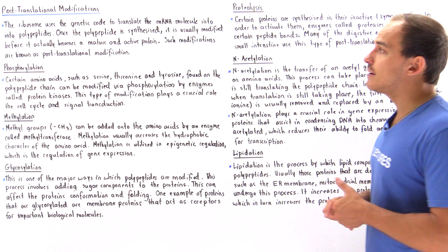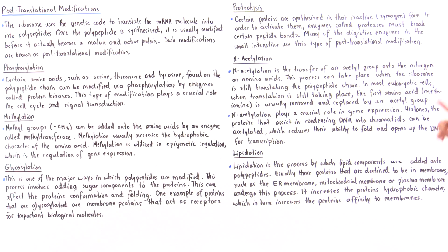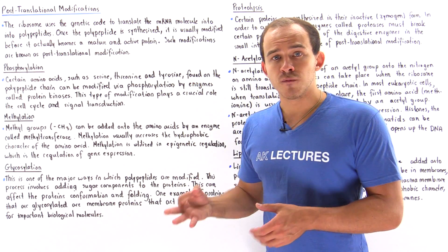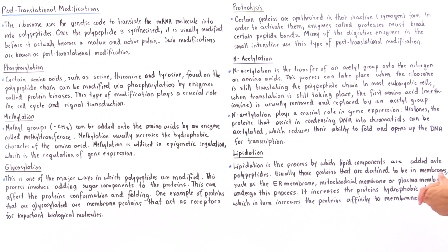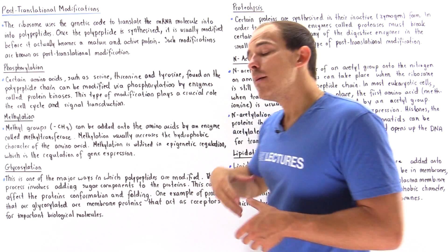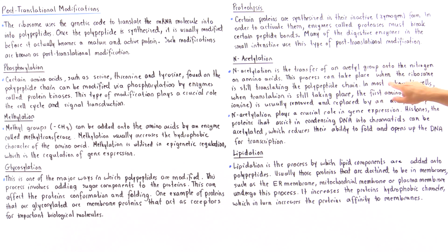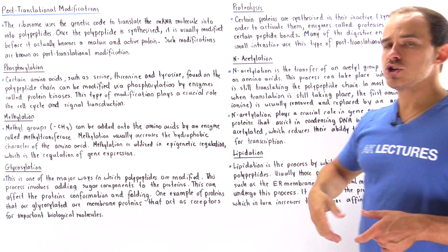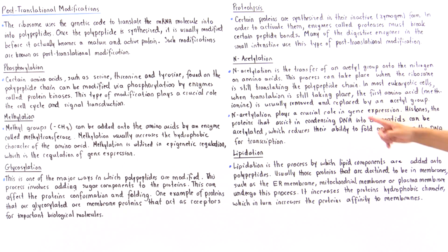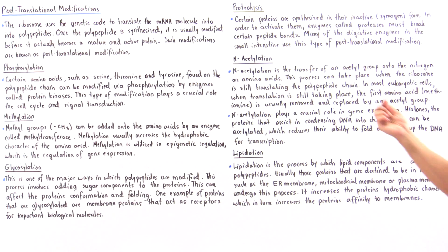Let's move on to the fifth type of post-translational modification known as N-acetylation. N-acetylation is the transfer of an acetyl group from one molecule to an amino acid on the polypeptide chain. This process not only takes place after translation, but also during the process of translation. In most eukaryotic cells, when translation is still taking place, the first amino acid in the growing polypeptide chain, usually our methionine amino acid, is removed and replaced by an acetyl group.